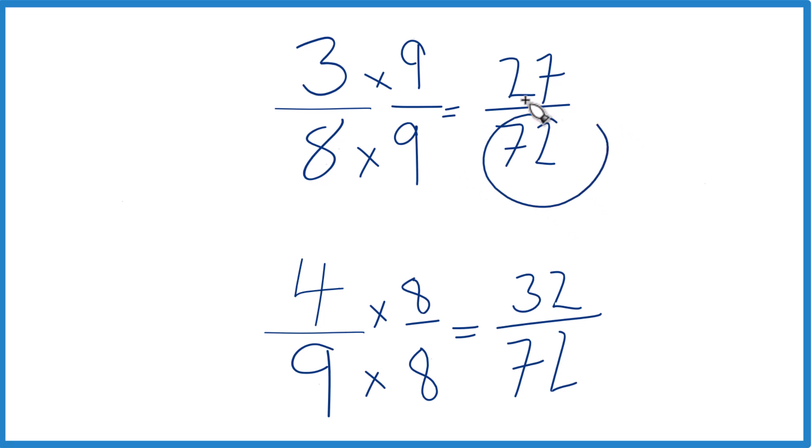And now we have the same denominator, and because of that, we can just compare the numerators. And you can see that 32 is larger than 27, so 32/72 is larger than 27/72 by 5/72. So not a lot.